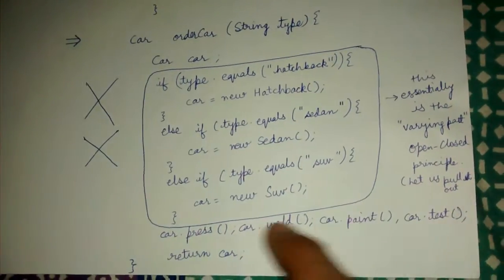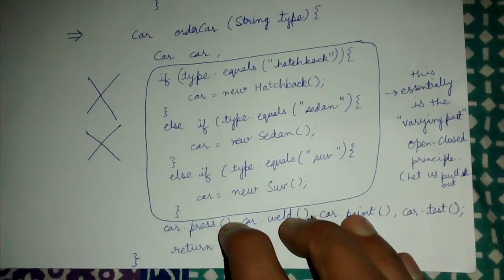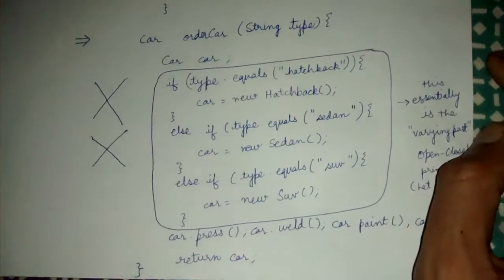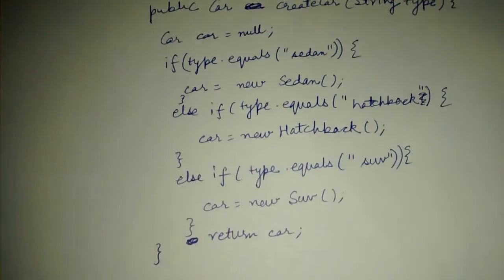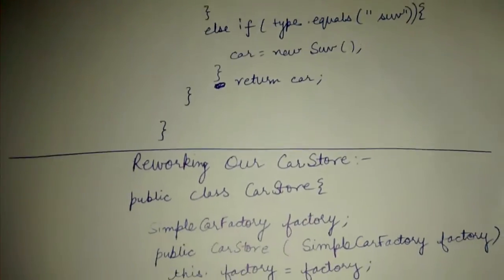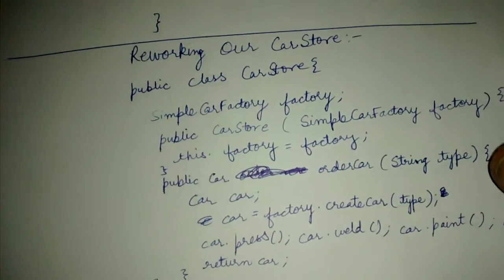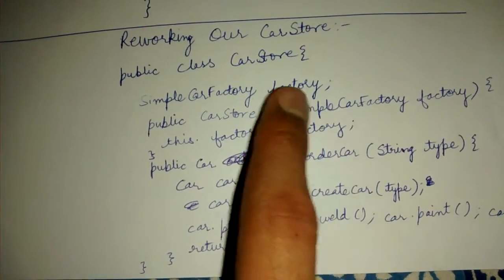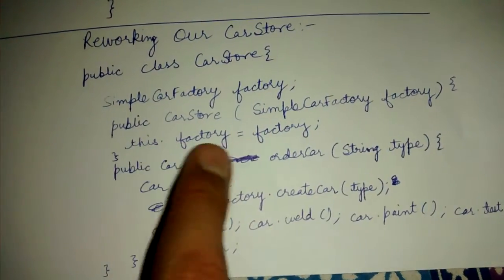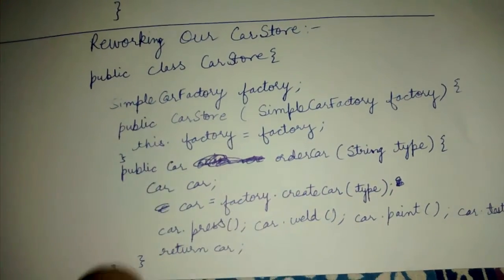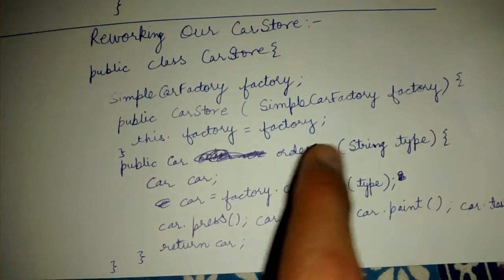car.press, car.weld, car.paint, test - these things we anyhow have to do after we have got the car object. These things will not change, so these things we can retain in the business class itself. But the creation part we can move to a separate class, which is our SimpleCarFactory class. Let's rework our CarStore. Our CarStore will have a SimpleCarFactory class reference, and this is its basic constructor which just initializes that reference.